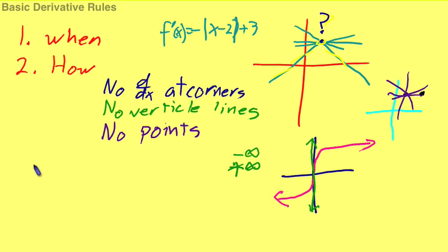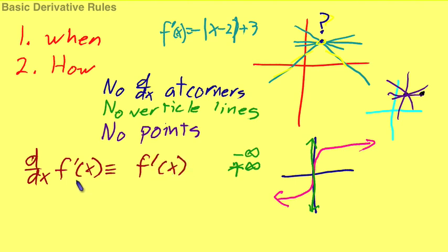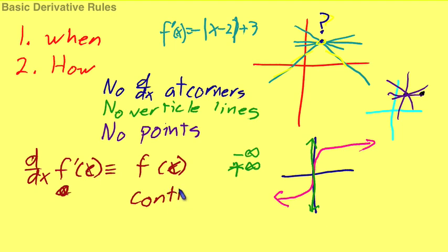The rule is, in order to find the derivative at f of x, two conditions must apply. In order to apply the derivative of f of c, f of x must exist at c, and it also must be continuous at c. So f of x must exist at c and it must be continuous at c.